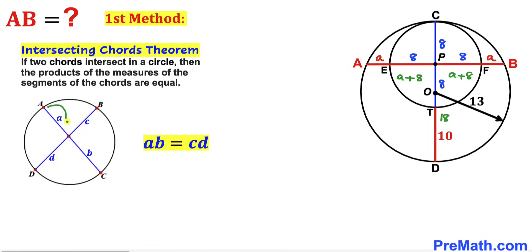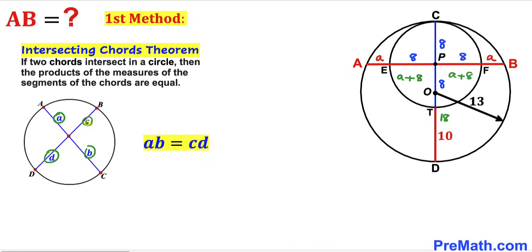We can see that our two chords AB and CD intersect each other at point P, giving us segments which we can label A, B, C, and D respectively, such that segment A times segment B equals segment C times segment D.